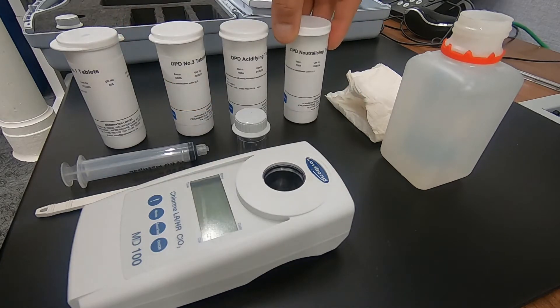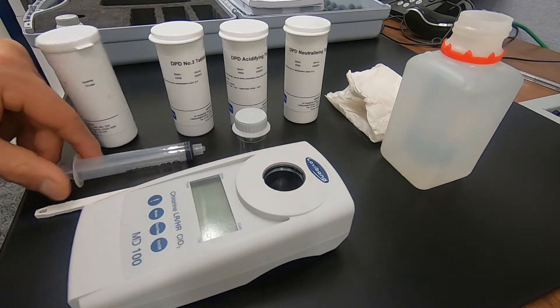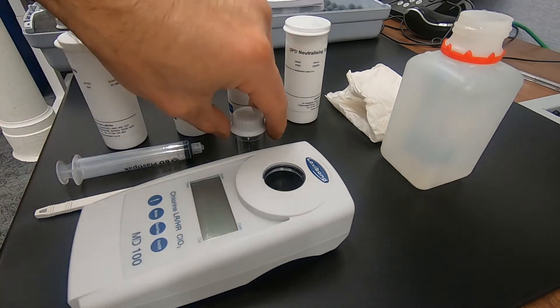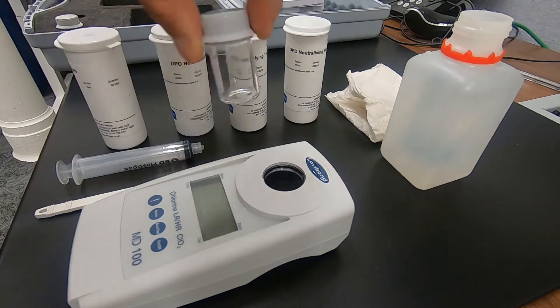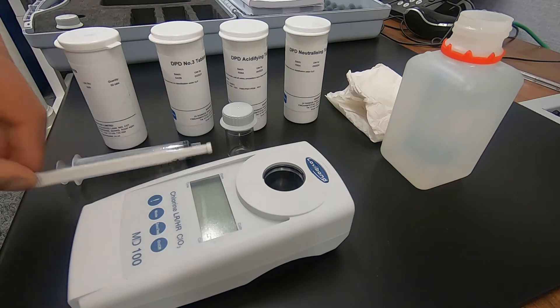These are all tablets. We'll need a 10 milliliter syringe, a 10 milliliter vial and a crushing rod to crush and dissolve the tablets.